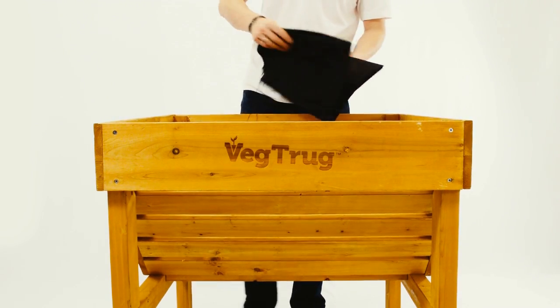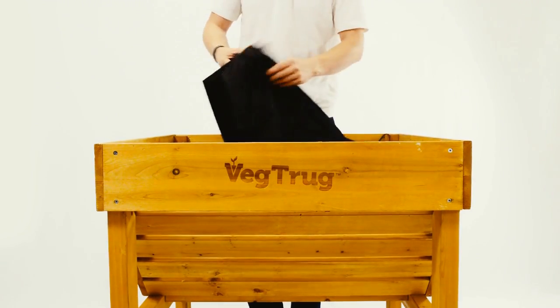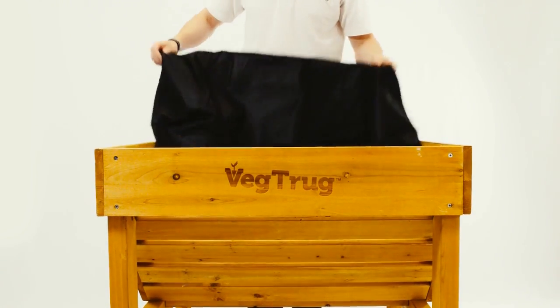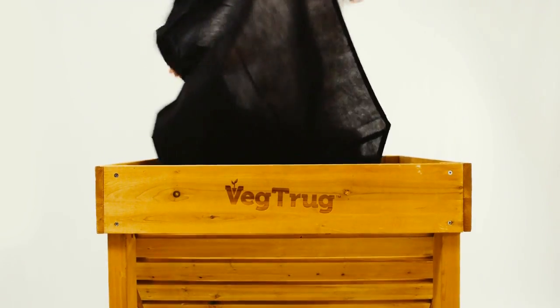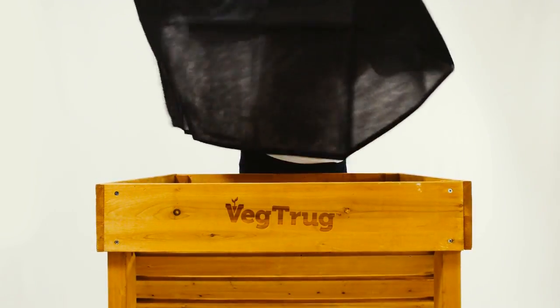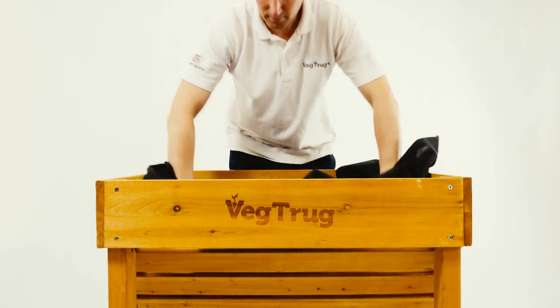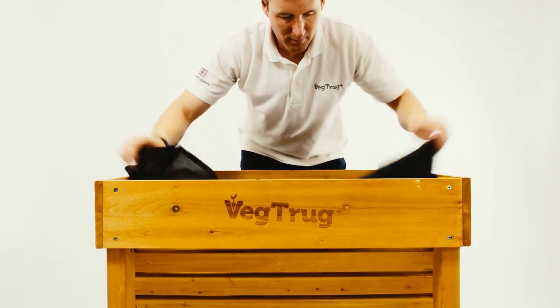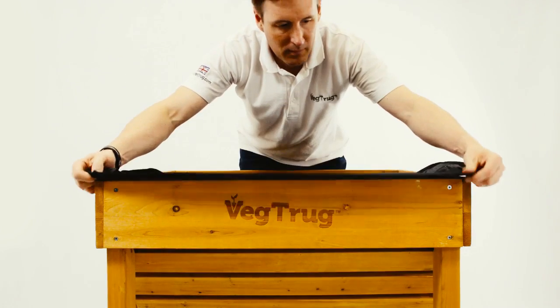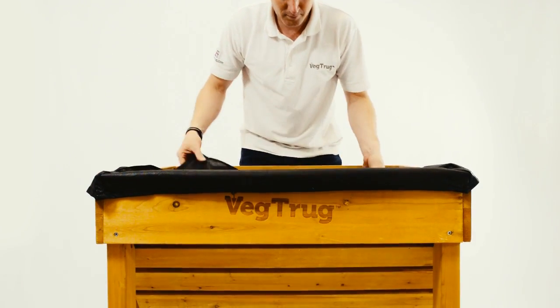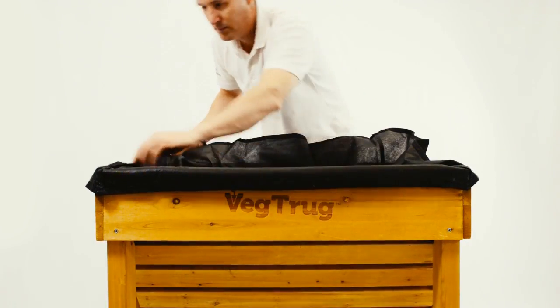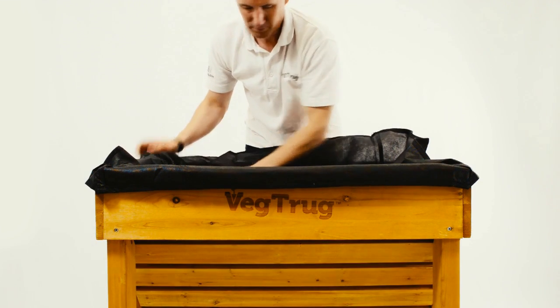Now you can place the pre-formed liner into the VegTruck. The liner has a drawstring which you can pull tight around the upper outside of the VegTruck whilst you are filling the liner with soil. The drawstring is designed to hold it in place during this process.